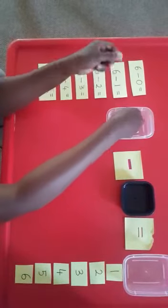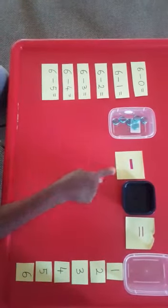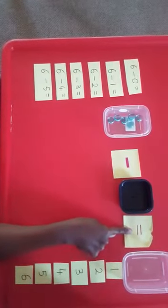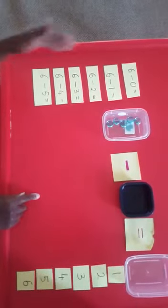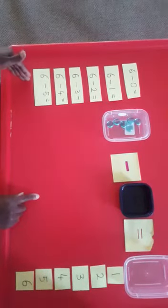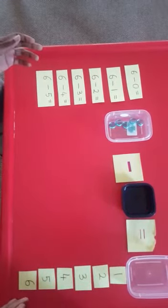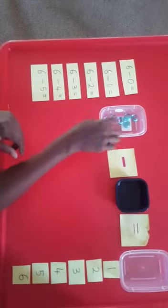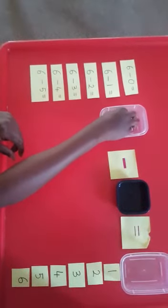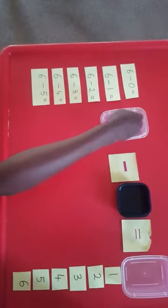Let me introduce the items I have here. I've got three containers — two identical ones and one different one. I've got stones because we're going to use the number six. I've got the subtraction sign and the equals sign. On my left hand side I've got the equations, and on my right hand side we've got the answers. The separate container is here to isolate what we're going to take away.